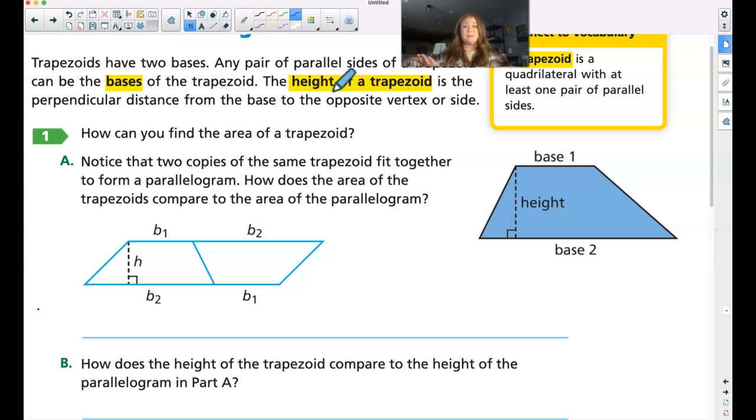So the height of our trapezoid is always going to connect our bases. So if I have base and base that are parallel, the height is the connector straight up and down between those.